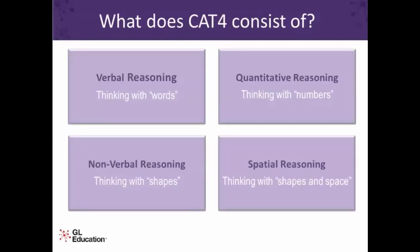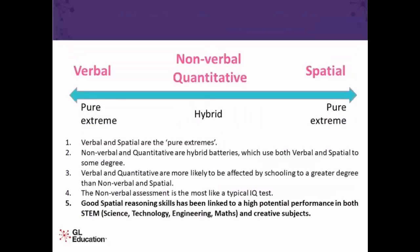What does CAT4 consist of? There are four batteries within the CAT4 assessment. Verbal reasoning — thinking with words. Quantitative reasoning — thinking with numbers and looking for patterns within numbers. Nonverbal — thinking with 2D shapes. And spatial reasoning — the ability to manipulate images and visual pictures in your mind, thinking with 3D objects.